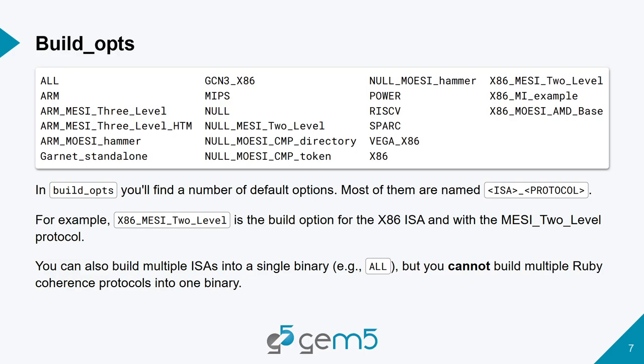These are all the build_opts files, and you can see a lot of them. There's Vega x86, which has the GPU model built into it, like the cache coherency required for a GPU-CPU connection — it's modeling something like an AMD APU.